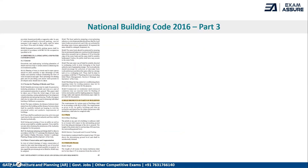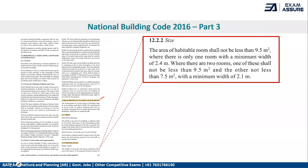Secondly, another very important part from Part 3 is knowing the requirements of parts of building — that is Section 12 under Part 3 — where various kinds of definitions or size requirements are asked not only in GATE but also in other government exams related to architecture and planning. For example, let us take the size of a habitable room.